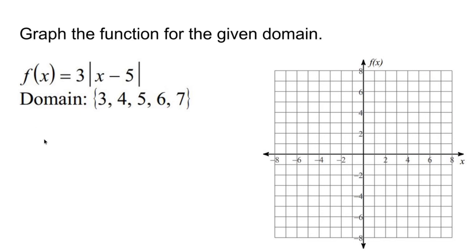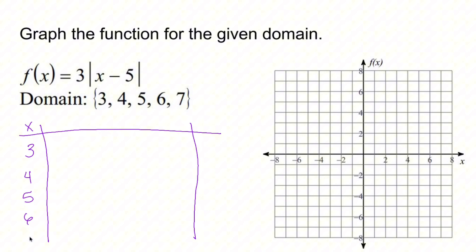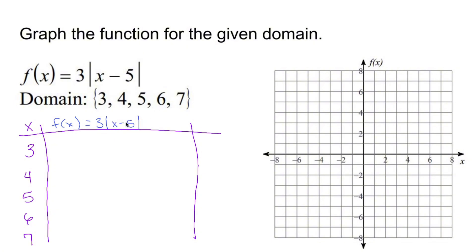Let's make ourselves a little table — a three-part table. In the first column I'm going to have the x values, which is my domain: three, four, five, six, and seven. In the middle, I'm going to calculate what f of x is given each x value. So I have three times the absolute value of x minus five.